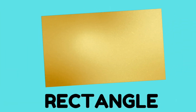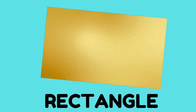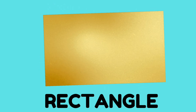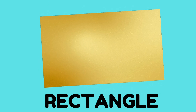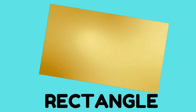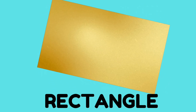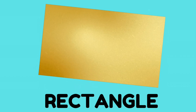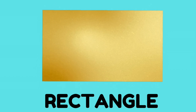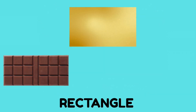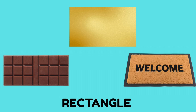This is a rectangle. Say, rectangle! A rectangle has two long sides and two short sides. A chocolate bar and a doormat are rectangles.